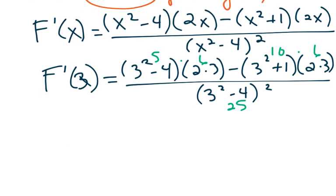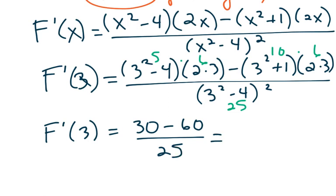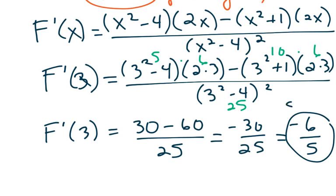So if I simplify, I get f prime of 3 is equal to 5 times 6, which is 30 minus 60 over 25, which is negative 30 over 25, which gives me negative 6 over 5. So this work right here is my slope, all of that finding derivative and plugging in is to find our slope.